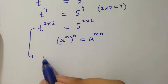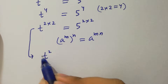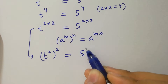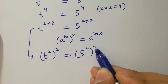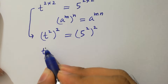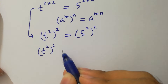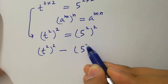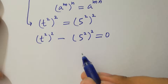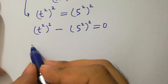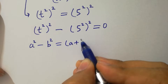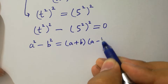Applying the rule (aᵐ)ⁿ = aᵐⁿ, it will be (t²)² equals (5²)². This can be written as (t²)² minus (5²)² equals 0. By the formula a² minus b² equals (a+b)(a-b):